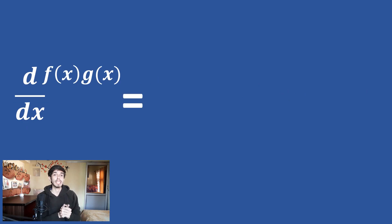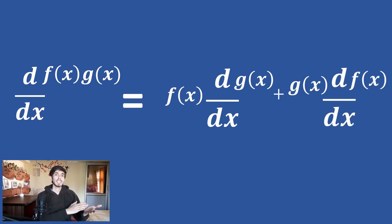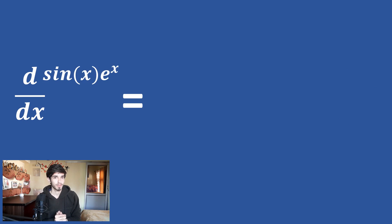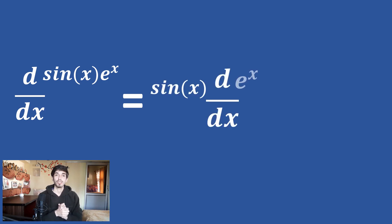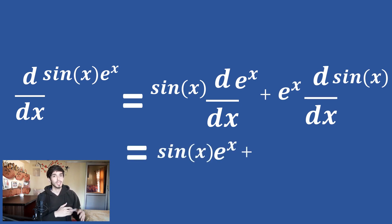Differentiation of two functions multiplied with each other: memorize it like this — first function times differentiation of the second function, plus second function times differentiation of the first function. You can call either one the first or second. For example, differentiation of sin x multiplied by e raised to the power x: let sin x be the first function and e to the power x be the second. So it is sin x times differentiation of e to the power x, plus e to the power x times differentiation of sin x, which is cos x. We can factor out e to the power x to get the final answer.